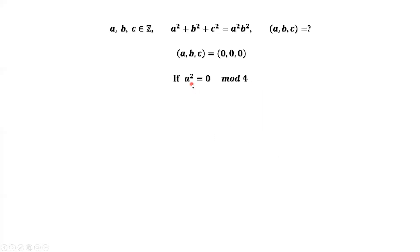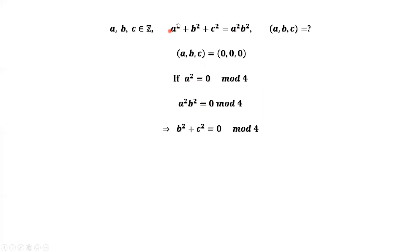Let's discuss the case where A squared has remainder zero when divided by four. A squared is divisible by four, which implies A squared times B squared is also divisible by four — the remainder is zero. Using number theory notation, the remainder for the left-hand side is the remainder of B squared plus C squared, and the right-hand side has remainder zero. This implies that B squared is divisible by four with remainder zero, and C squared is divisible by four with remainder zero.